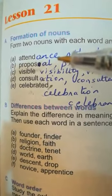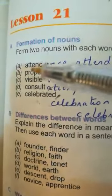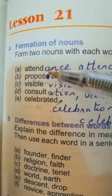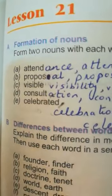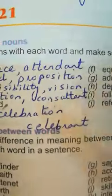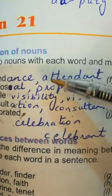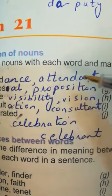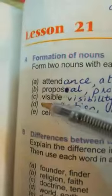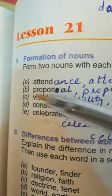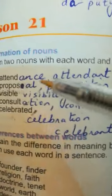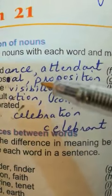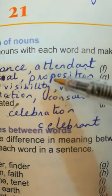The first word is 'attend': attendance (A-T-T-E-N-D-A-N-C-E) and attendant (A-T-T-E-N-D-A-N-T). Next word is 'propose': proposal (P-R-O-P-O-S-A-L) and proposition — the act of proposing something (P-R-O-P-O-S-I-T-I-O-N).